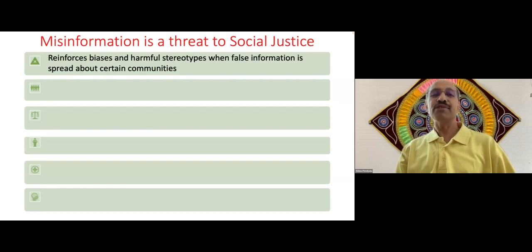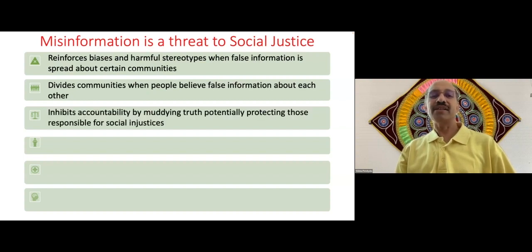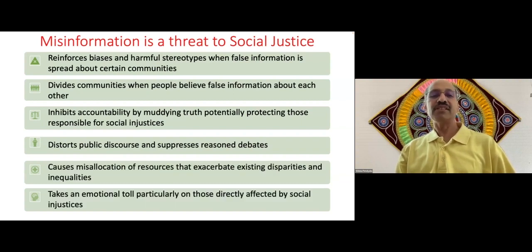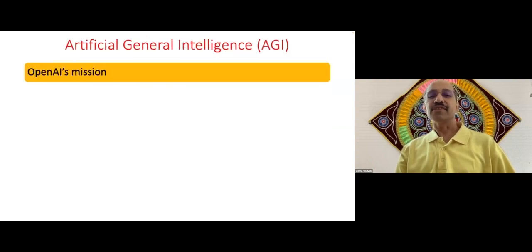So misinformation is a threat to social justice in many ways. It reinforces biases and harmful stereotypes when false information is spread about certain communities. It divides the communities, obviously, when there is false information. It inhibits accountability by muddying truth. We all know these problems. It distorts the public discourse. And this is a very serious problem because in Latin America, it was proven that a person changed the outcomes of the presidential elections. Right now, I think he's in jail. But using bots on microblogging sites like Twitter, he changed the public discourse and that in turn changed the outcome of presidential elections. So it is that dangerous. It could cause misallocation of resources.